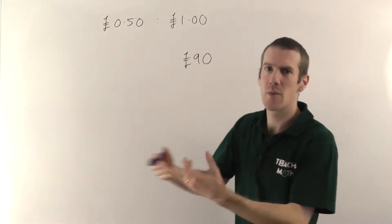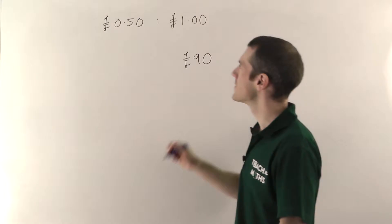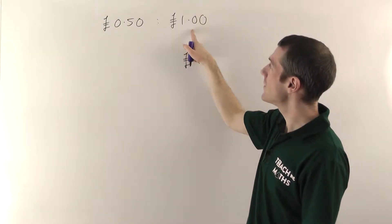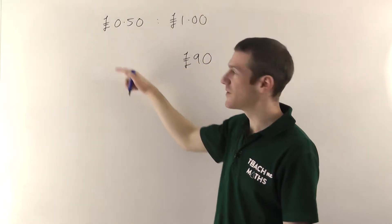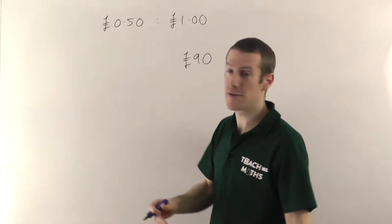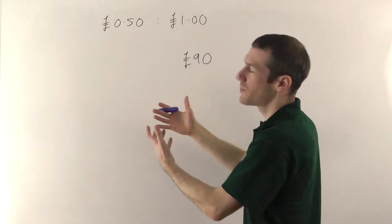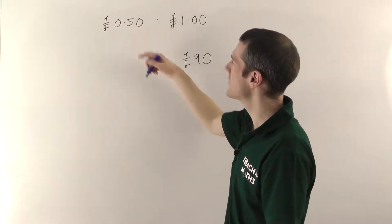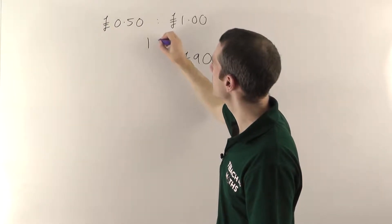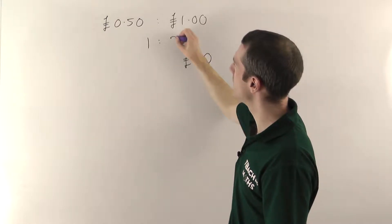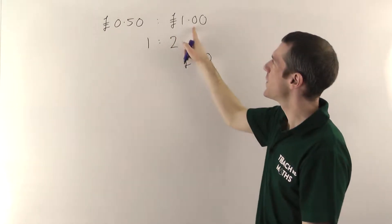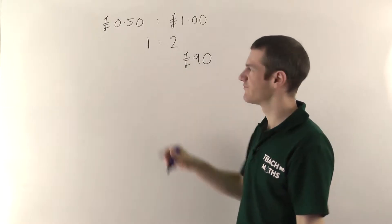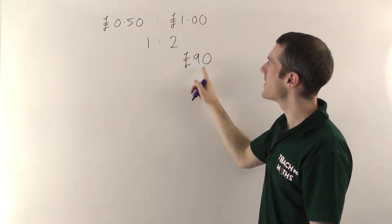So what is this ratio? A pound is twice as much as 50p — 50p is half a pound. If we want to multiply up to get whole numbers on either side, multiplying a half gives me one, and times two gives me two. He's putting in twice as much as me, so the ratio is one to two. We have to split up the 90 pounds in the ratio one to two.